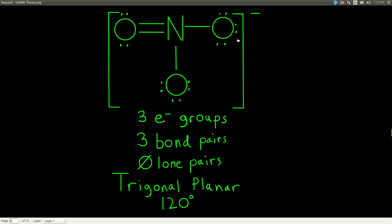In the nitrate polyatomic ion, there are three electron groups on the central atom — remember, the double bond counts as just one. There are zero lone pairs on the central atom, so three electron groups, three bond pairs, zero lone pairs. The molecular geometry or shape is trigonal planar, and the bond angle is 120 degrees.